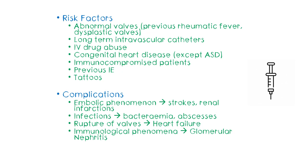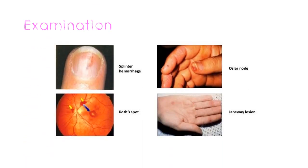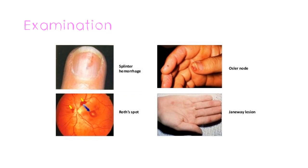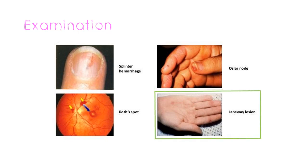After obtaining a thorough history we move on to examination. There are unique features such as Roth spots on ophthalmoscopic examination, due to retinal capillary rupture and intraretinal hemorrhages, proposed to be due to immunological phenomena. Splinter hemorrhages are a result of capillary rupture and are vasculitic phenomena. Osler's nodes are also due to immunological phenomena — painful lesions on the fingertips. Janeway lesions are due to vasculitic phenomena where septic microemboli cause rupture of vessels and small infarctions.